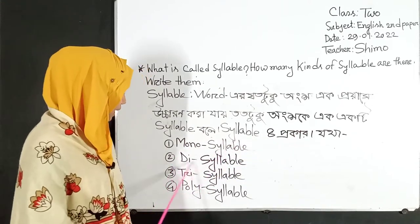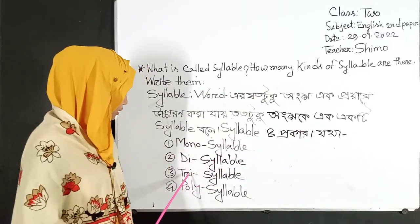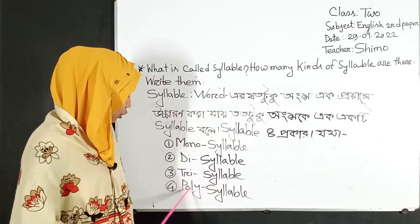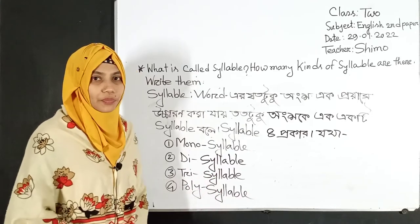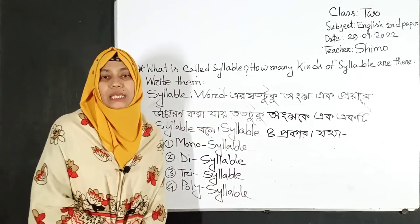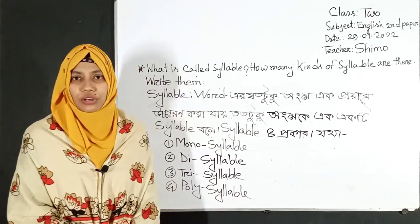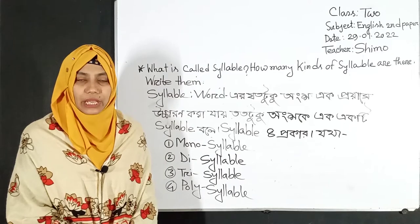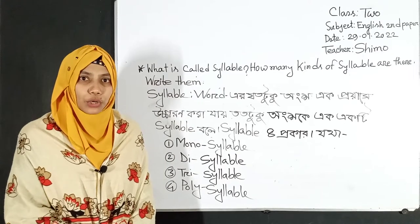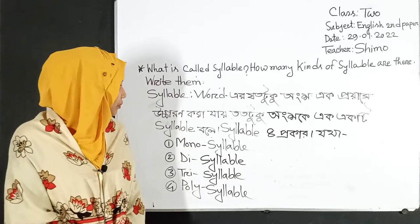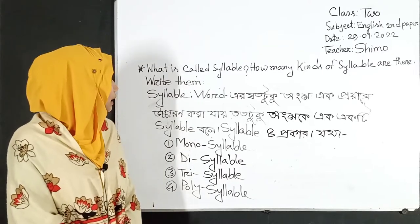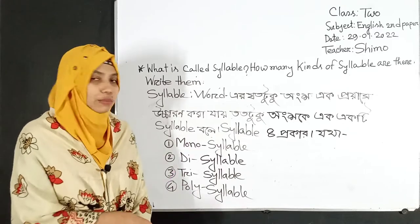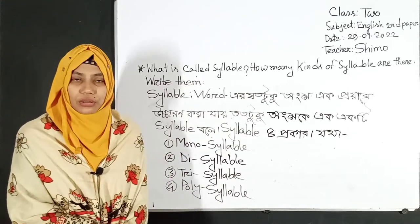Monosyllable, disyllable, trisyllable, and polysyllable. This is monosyllable, disyllable, trisyllable, and polysyllable. We have to use this to identify monosyllable.